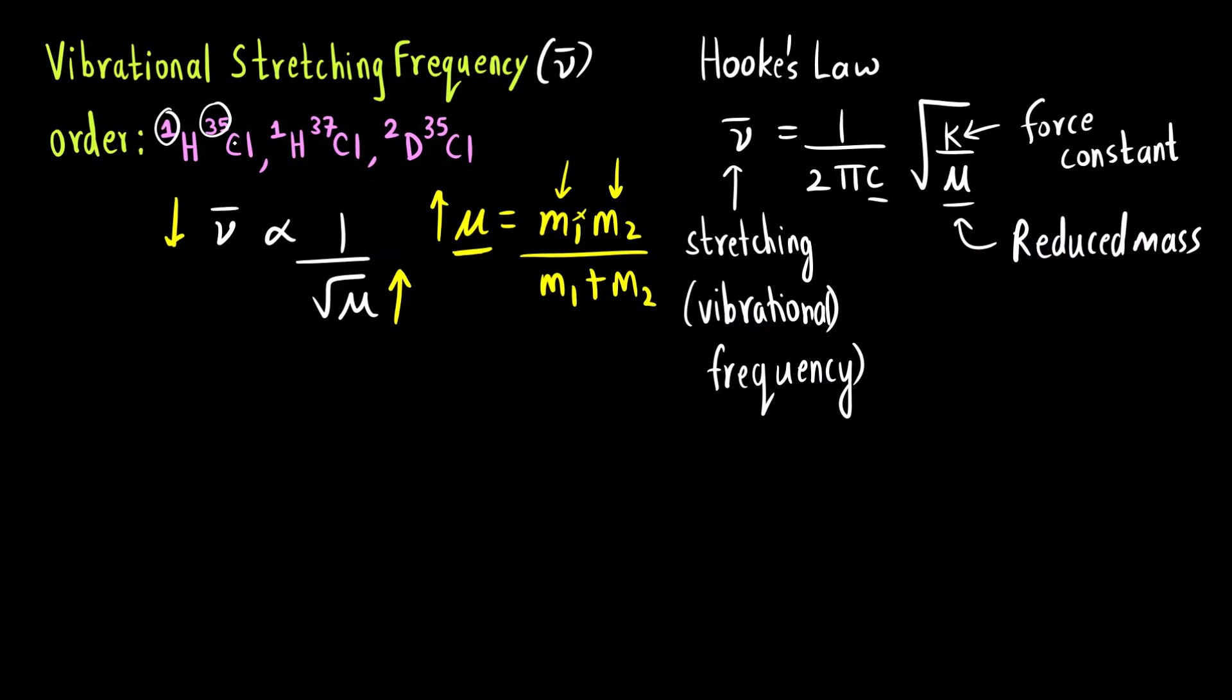In which of the following options you can see that the atomic masses is the minimum? That is this first one 1 and 35. Here it is 1 and 37. Here it is 2 and 35, right? So here it is minimum. If I first write down the order of reduced mass, the reduced mass of H 35 Cl will be minimum. Then 37 is greater than 35. Then 1H 37 Cl will be more than that and maximum value of reduced mass will be of 2D 35 Cl.